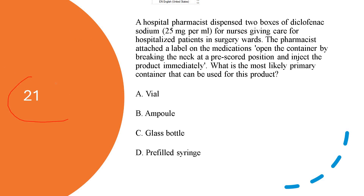Next, question 21. A hospital pharmacy dispenses two boxes of diclofenac sodium 25 mg/ml for a nurse giving care to a hospital patient in surgery. The pharmacist attaches a label on the medication, opens the container by breaking the neck at the pre-scored position, and injects the product immediately.